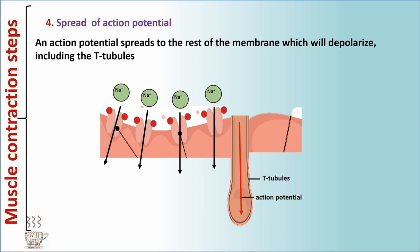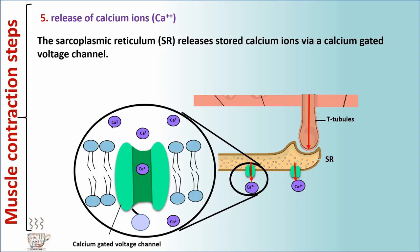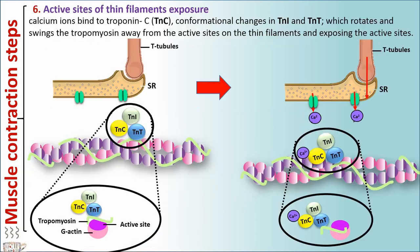Step 4: Spread of action potential. An action potential spreads to the rest of the membrane, which will depolarize, including the T-tubules. Step 5: Release of calcium ions. The sarcoplasmic reticulum releases stored calcium ions via a calcium-gated voltage channel. Step 6: Exposure of active sites of thin filaments. Calcium ions bind to troponin C, causing conformational changes in troponin I and troponin T, which rotates and swings the tropomyosin away from the active sites of the thin filaments, exposing the active sites.